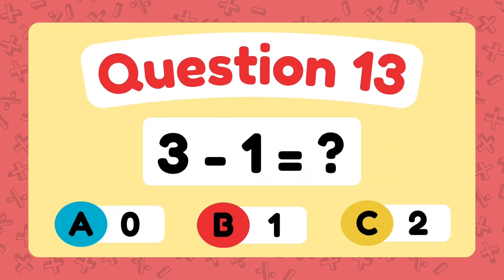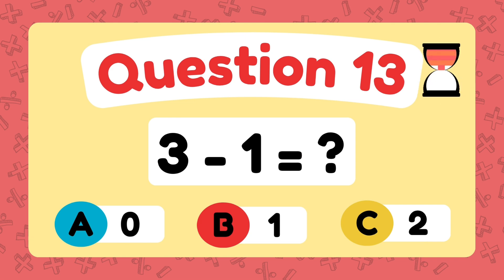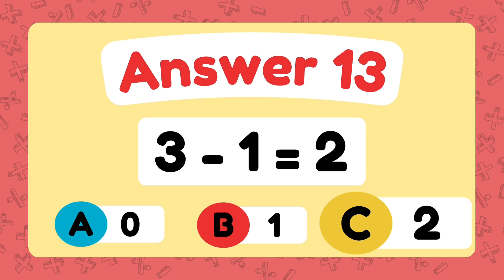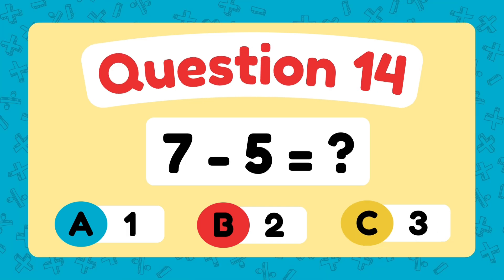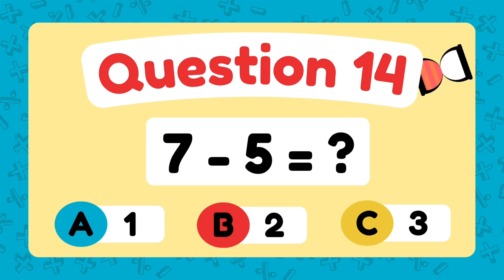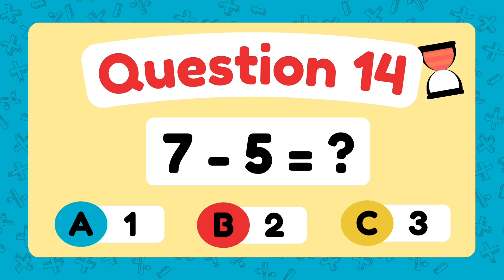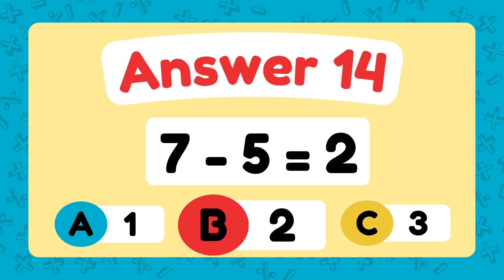What is 6 minus 2? What is 9 minus 4? The answer is 5. What is 7 minus 5? The answer is 2.